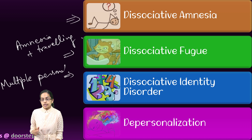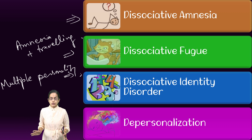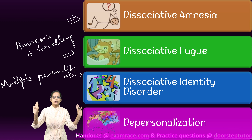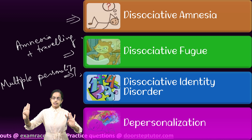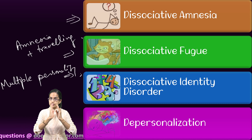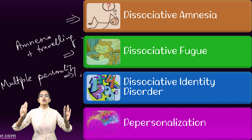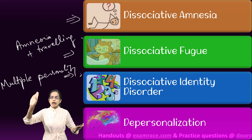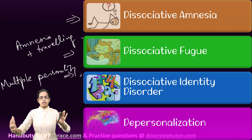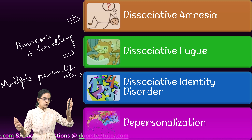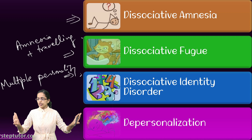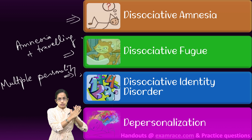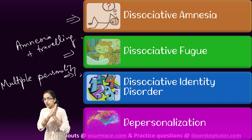Dissociative identity disorder, also known as multiple personality, is when the same person has two different states. When under stress, the person behaves totally differently than when not under stress. One personality is unaware of what the other did — not willingly, but genuinely not knowing. The same personality has two states of mind, each potentially doing contrasting things without knowledge of the other.